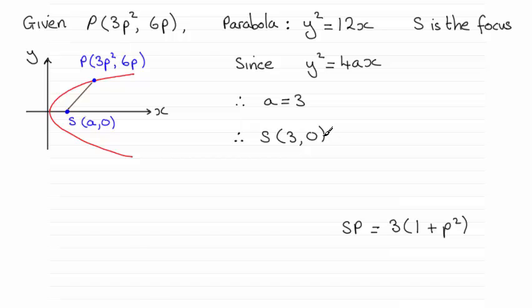Now we've got the coordinates of the focus, we can work out the distance SP just by using Pythagoras' theorem. So in the usual way, SP squared would be equal to the difference in the x-coordinate squared plus the difference in the y-coordinate squared. So that gives us this equation here.